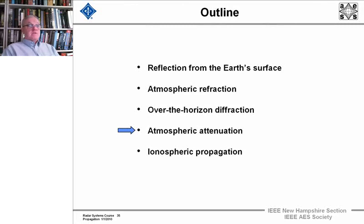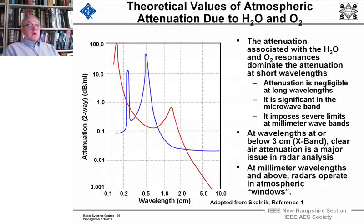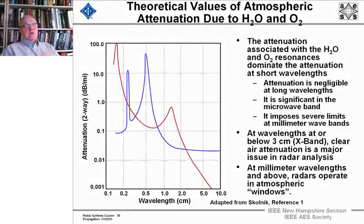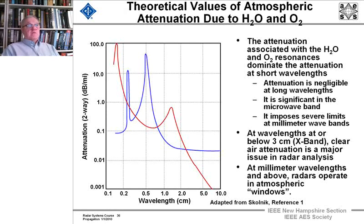And now on to atmospheric attenuation. There are two resonances of microwave energy with components in the atmosphere that dominate attenuation. One is that of water, which is marked in red. And the other is oxygen resonances, the tendency of O2 and H2O to absorb microwave energy. The attenuation is negligible at very long wavelengths, and it's significant in the microwave band, and it imposes very severe limits in millimeter wave band.